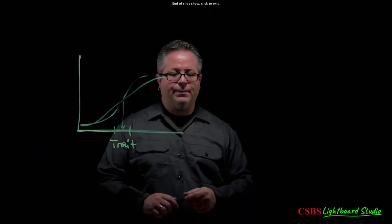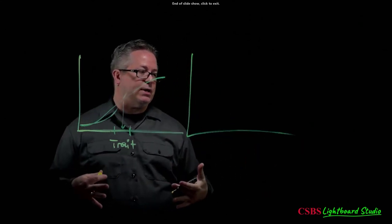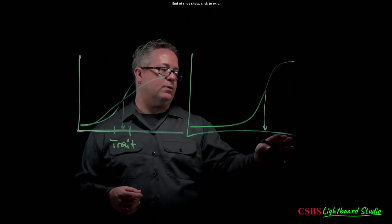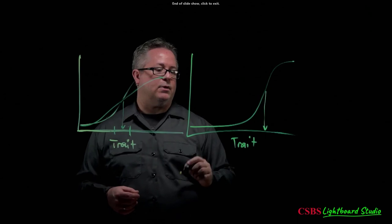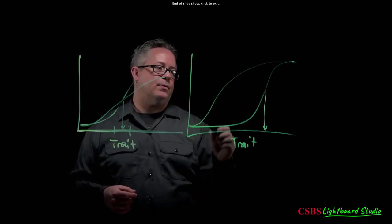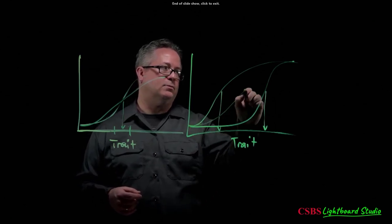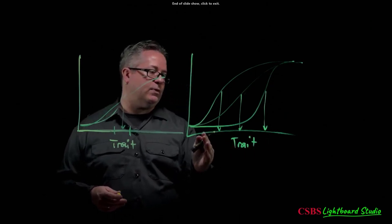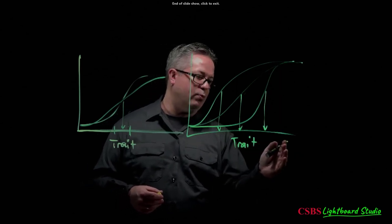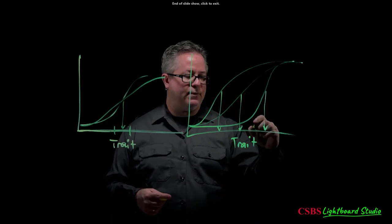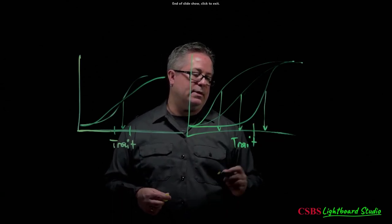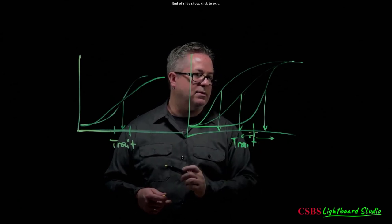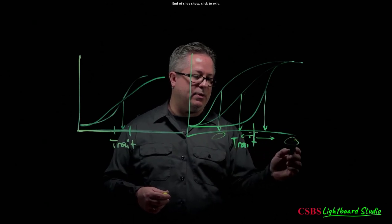What you typically want in a scale is items that vary in difficulty — some difficult (targeting high trait levels), some easy (targeting low trait levels), some in the middle — while all items remain fairly discriminating. This lets you separate people out across the full trait range. If you have a clinical cutoff, you need items that discriminate precisely around that cutoff point, not just at the extremes.